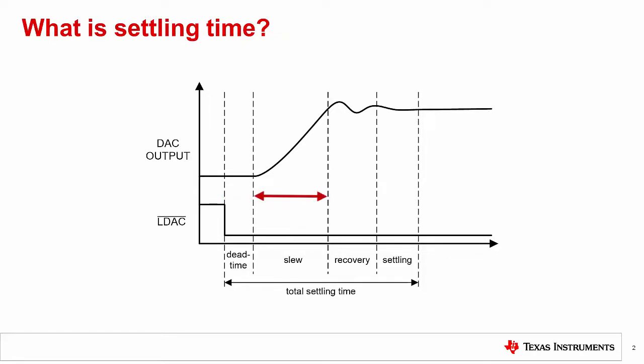Next the output will enter the slewing phase of the transition. In this time the amplifier is driving the output at the fastest slew rate it is capable of.